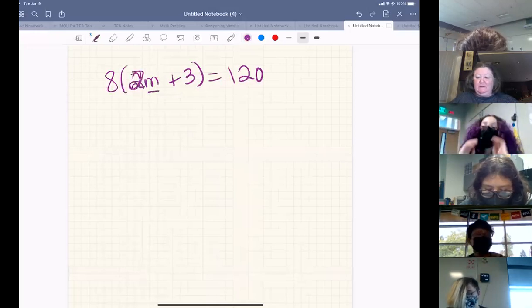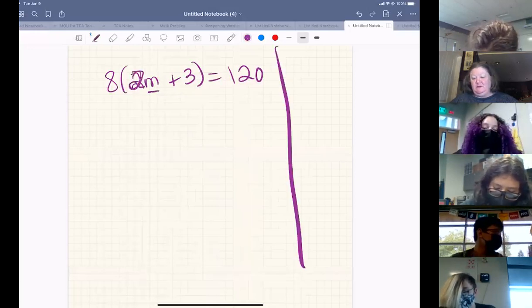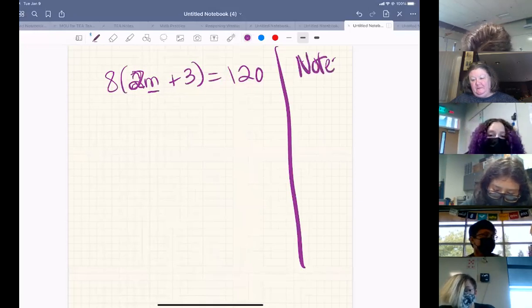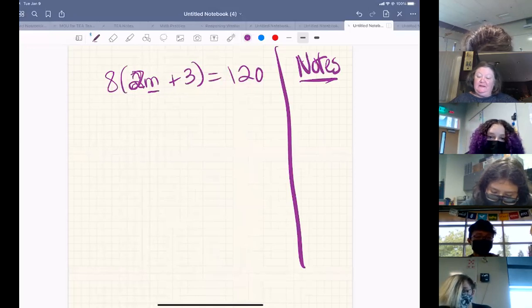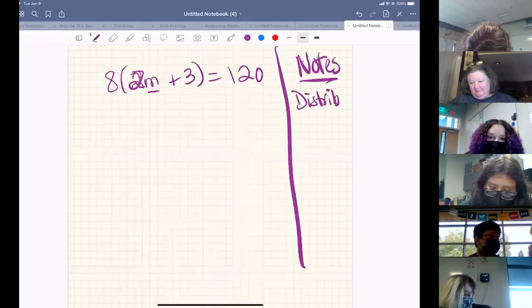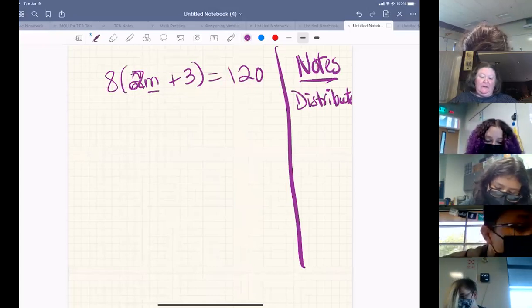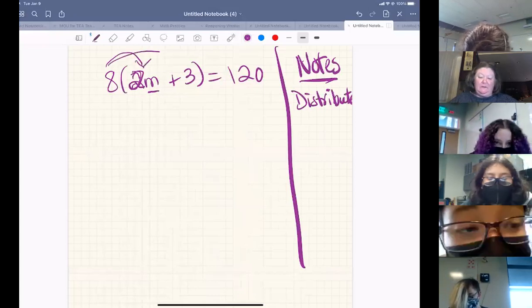So let's just review a few things that we've talked about, some notes over here. When we solve an equation, if we see that there's something that needs to be distributed, we do it first. And I see that right here, this eight needs to be distributed.